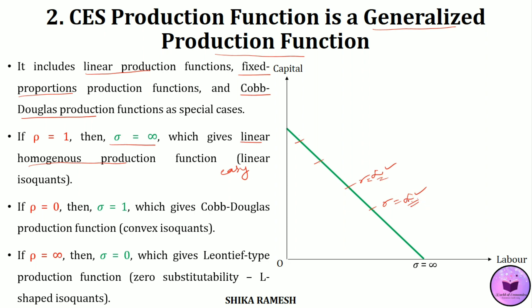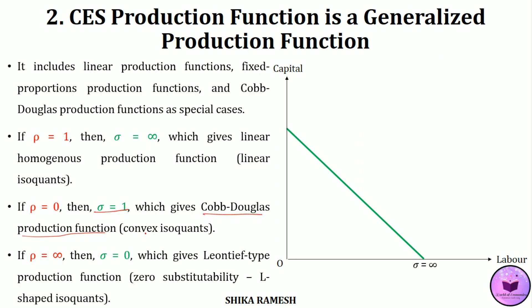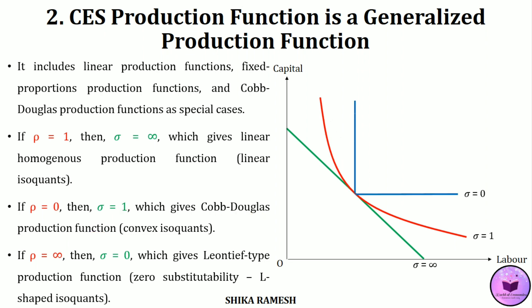If rho equals 0, then we get sigma as 1, which clearly represents a Cobb-Douglas production function represented by a convex isoquant. Here also, any point on the isoquant gives elasticity as 1, so a Cobb-Douglas production function also has a constant elasticity of substitution. Again, if rho equals infinity, then sigma equals 0, giving us a Leontief type of production function represented by an L-shaped isoquant — the case of perfect complements — showing zero substitutability between the factors.